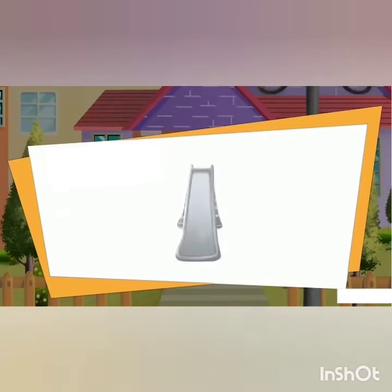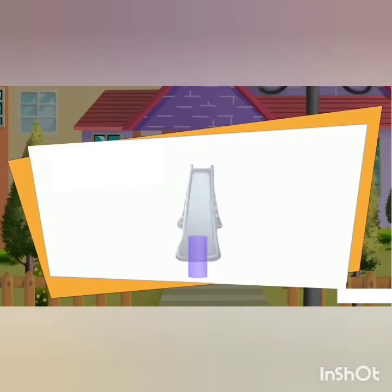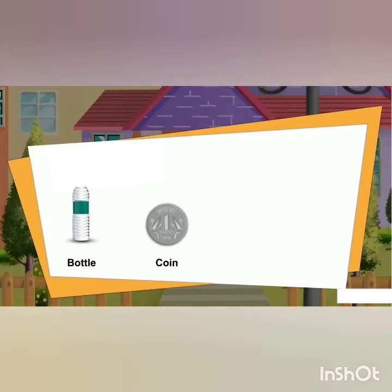The last one is a cylinder. It can slide and roll. Examples include a bottle, coin, chalk, and a pencil — these are examples of a cylinder.